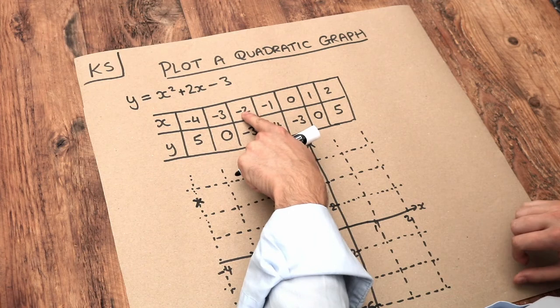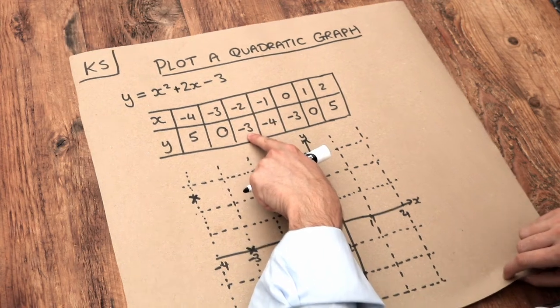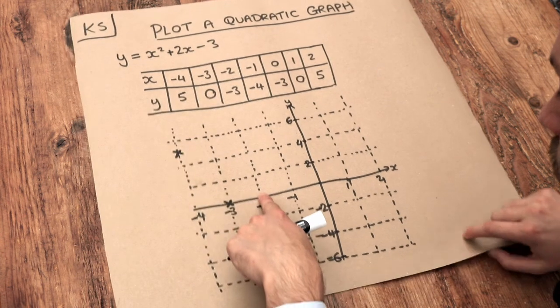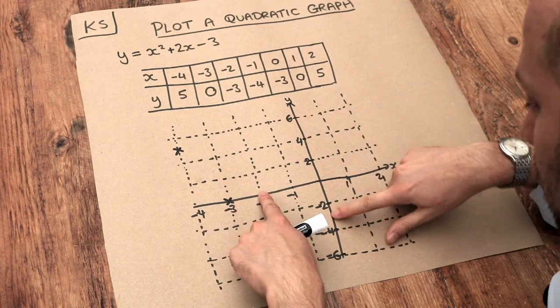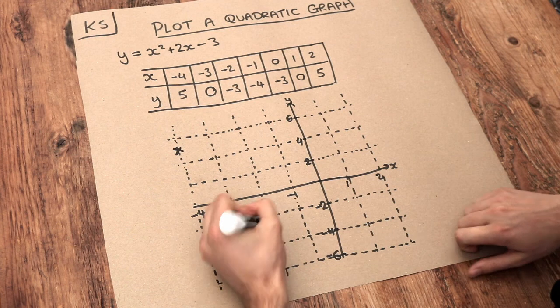We've also got when x is minus 2, y is minus 3. So when x is minus 2, which is here, y is minus 3. So minus 3 is going to be here. So we've got this point here.